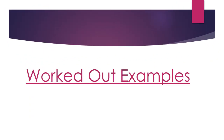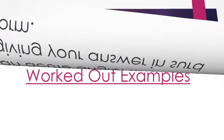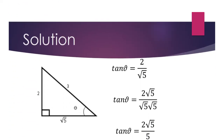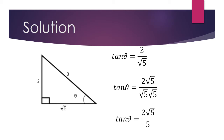I've got worked out examples. Question 1: Given that sin theta is 2 over 3 and theta is an acute angle, find tan theta giving your answer in surd form. We are going to consider a right-angled triangle in which one of the shorter sides is 2, the hypotenuse is 3, and then we can get the other shorter side by Pythagoras' theorem as root 5, and then one of the angles is theta.